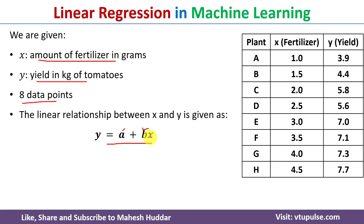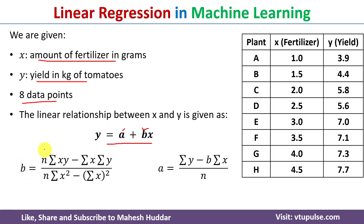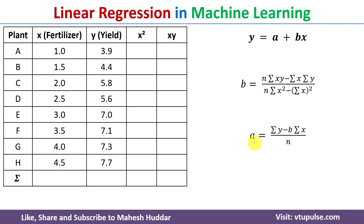To find the values of a and b, we use the following formulas. b is equal to n times summation of xy minus summation of x times summation of y, divided by n times summation of x squared minus summation of x bracket squared. And a is equal to summation of y minus b times summation of x, divided by n. To compute a and b, we need: summation of xy, summation of x, summation of y, and summation of x squared.